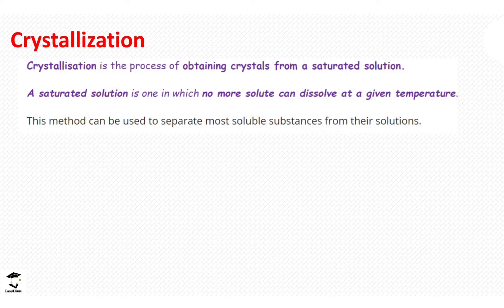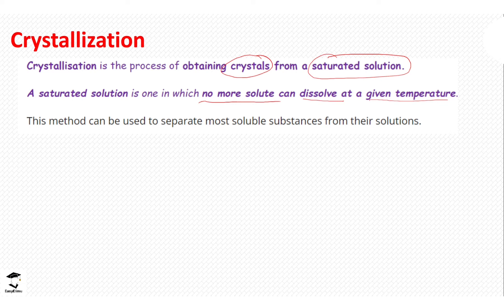Crystallization is a process where we obtain crystals from a saturated solution. A saturated solution is a solution where no more solute can dissolve at a given temperature. For example, if you take a cup of tea and keep adding spoons of sugar, at some point the sugar can no longer dissolve and is left at the bottom of the cup — that solution has reached its saturation point. We use this opportunity, when a solution reaches this point, to form crystals.